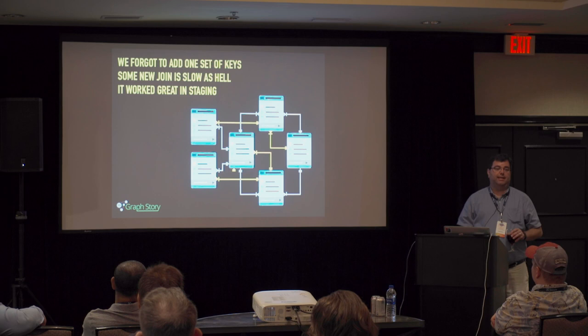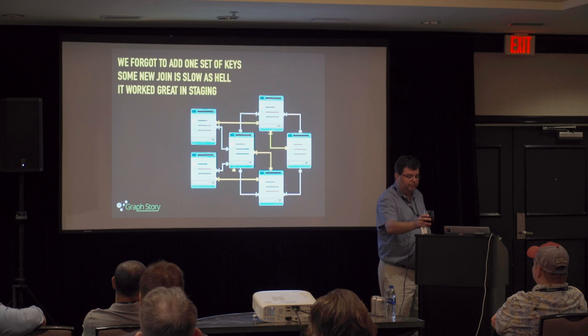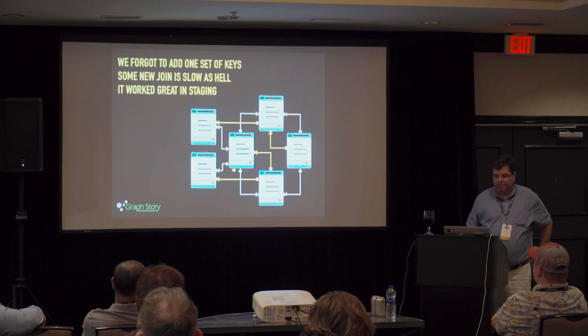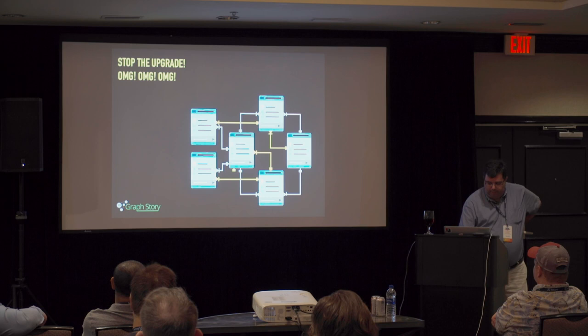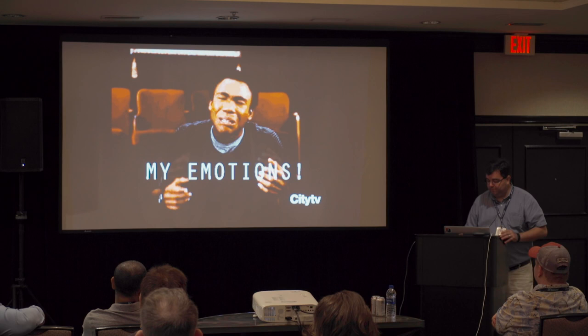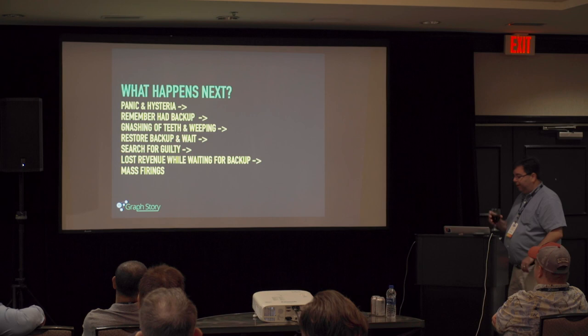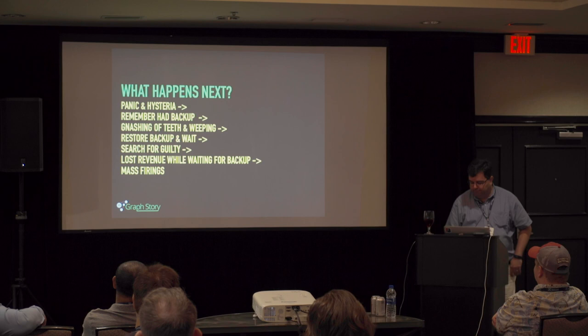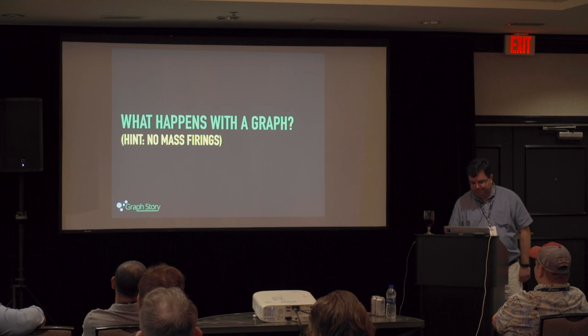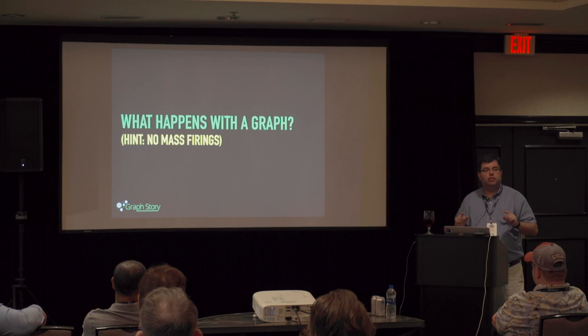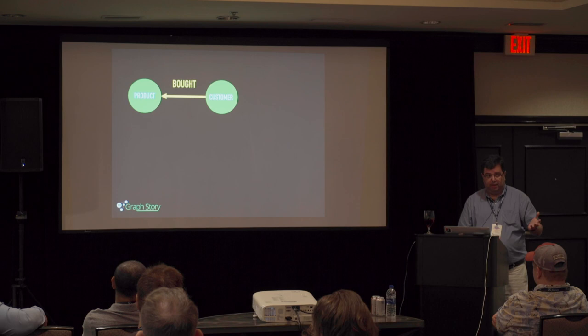You can still test it in staging, get to production, and something happens. Some new join is very slow. Stop the upgrade! Then panic in production, remember we had a backup, gnashing of teeth, weeping, restore the backup, wait, search for the guilty, lost revenue, mass firings. What happens in the graph? No mass firings. You can test everything out — it can change — but a relational system is just not as flexible. That's my point.